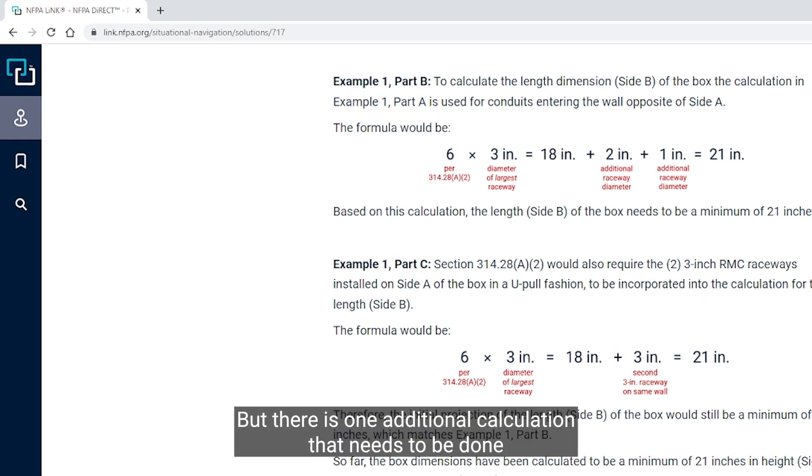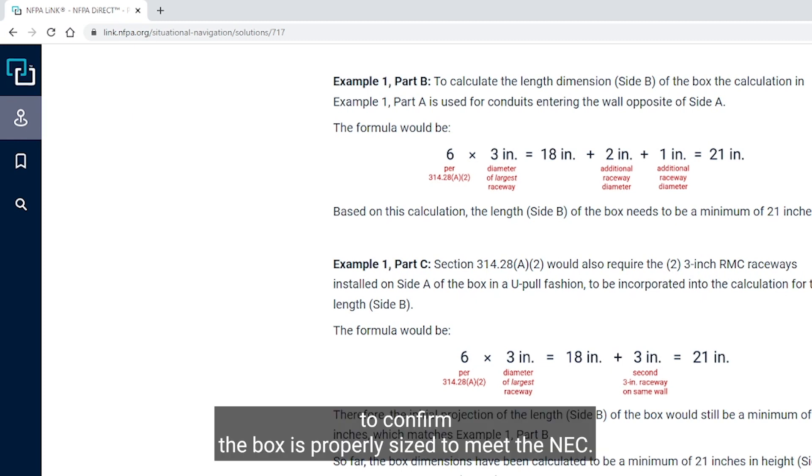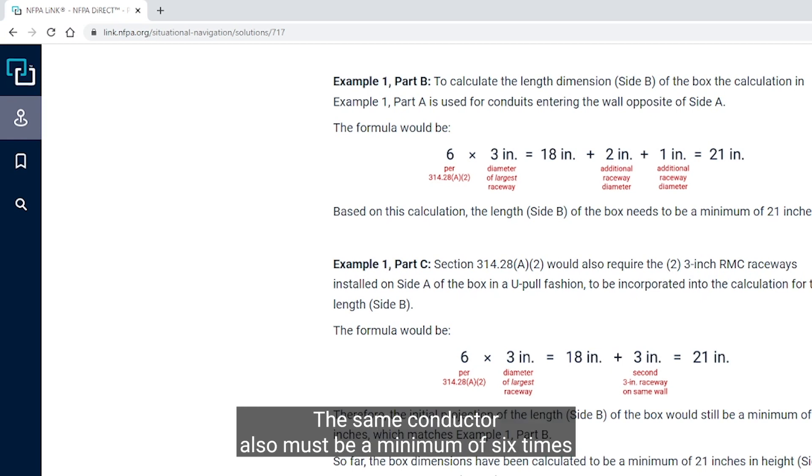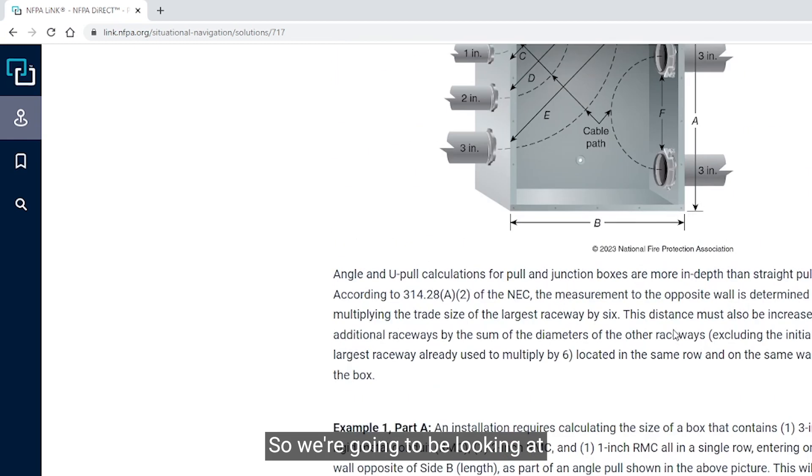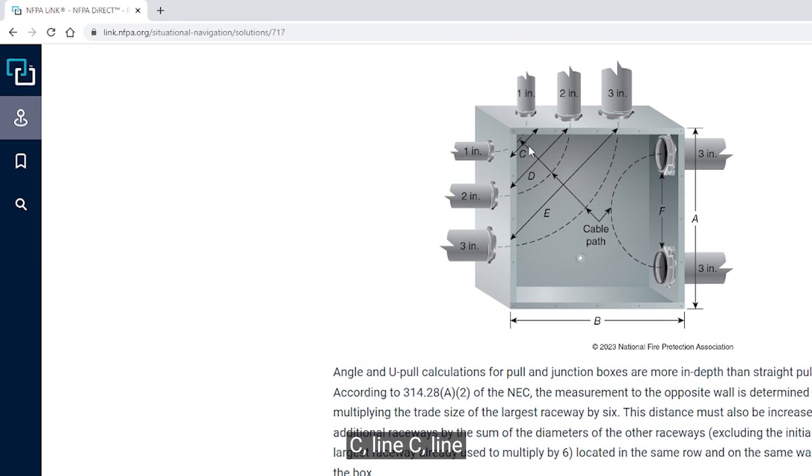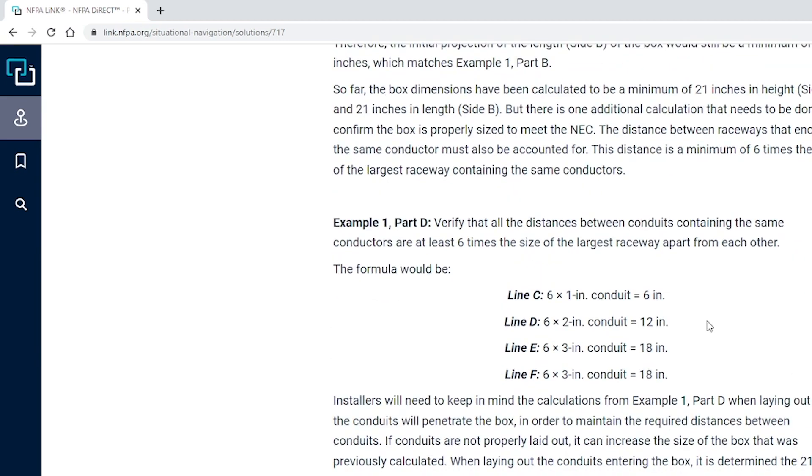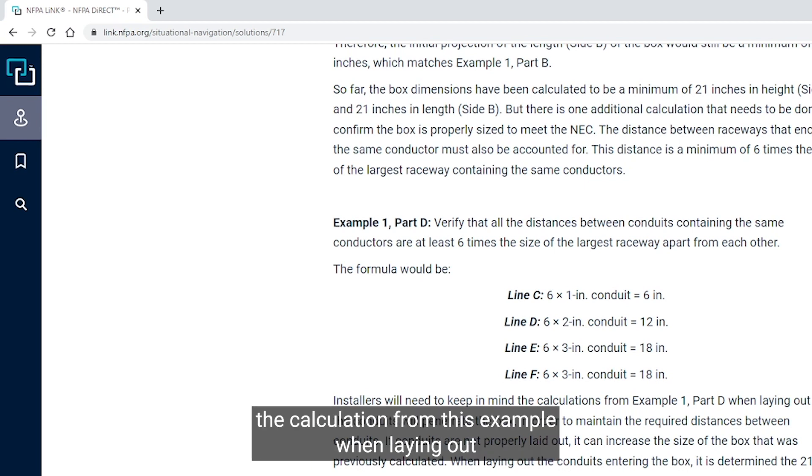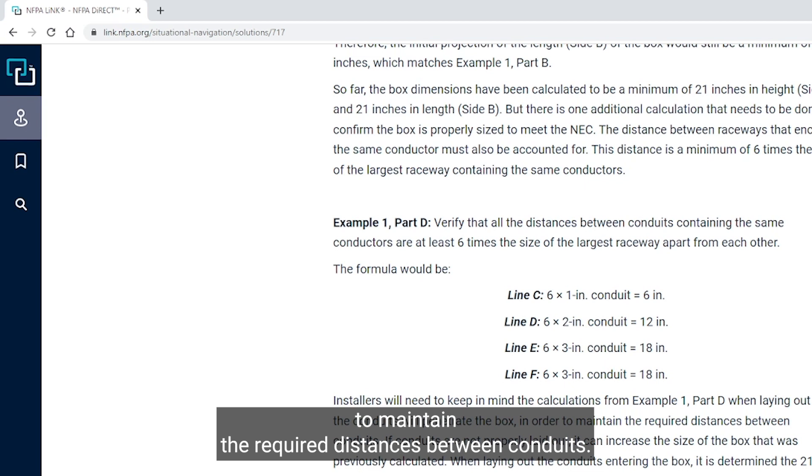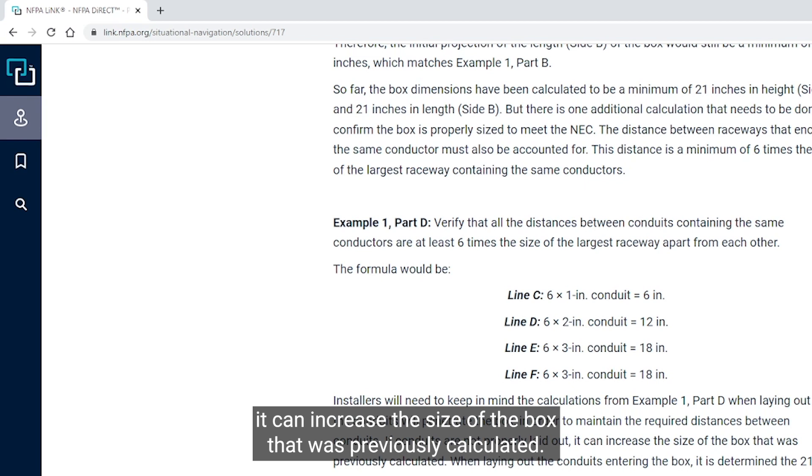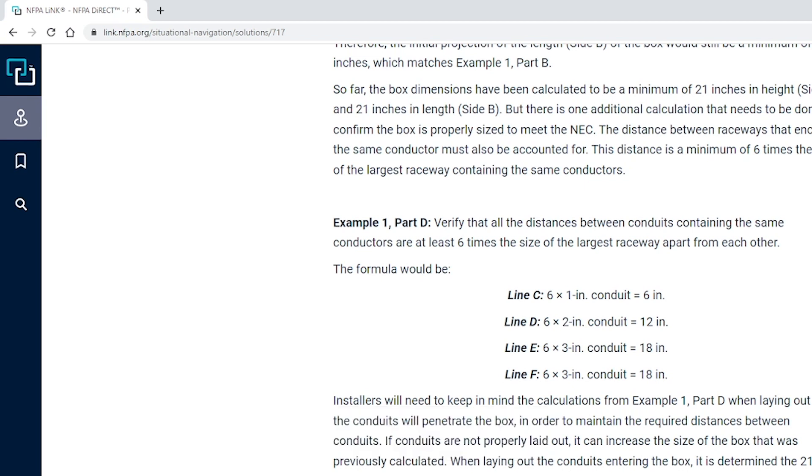According to 314.28(A)(2), we would need to multiply the two 3-inch, one of the two 3-inch raceways on side A by 6. So this formula would be 6 times 3 equals 18 plus the 3-inch is 21. So the wall opposite of A, so that again B dimension would still be 21 inches. So far the calculation of our box has been sized at a minimum of 21 inches in height, side A, and 21 inches in length, side B. But there is one additional calculation that needs to be done to confirm the box is properly sized to meet the NEC. The distance between raceways that enclose the same conductor also must be a minimum of 6 times the size of the largest raceway that contain the same conductors.